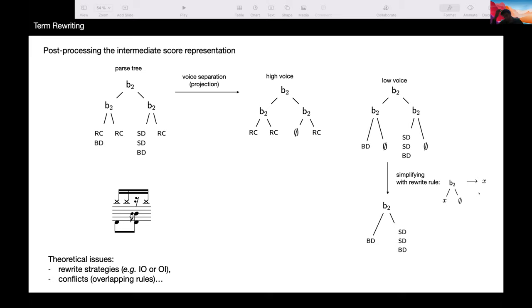This is obtained by simplification of this subtree using that term rewriting rule. We are applying, we have actually a system, a whole system, a bunch of different rules that we are applying to the trees that we obtained. There are some theoretical issues related to that, like which strategy we should apply, like bottom up or top down strategies for rewriting on different positions, or are there some overlapping rules and conflicts and how to solve.